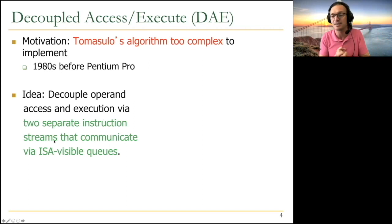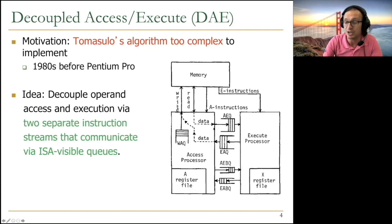You look like a decoupled access execute system. You have an access processor and execute processor. Access processor's task is just to get memory data and supply to the execute processor. Execute processor's task is to give the addresses that it needs to the memory processor. They communicate through these queues. It's beautiful, in a sense, because these are two different types of tasks. Memory accesses may be bottlenecked by memory, but computation may not be bottlenecked.